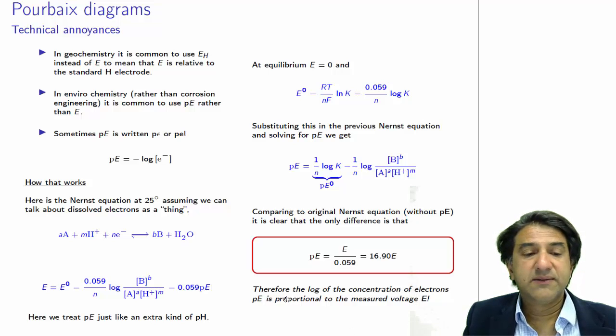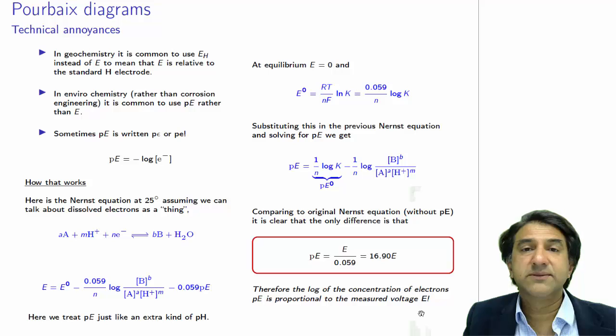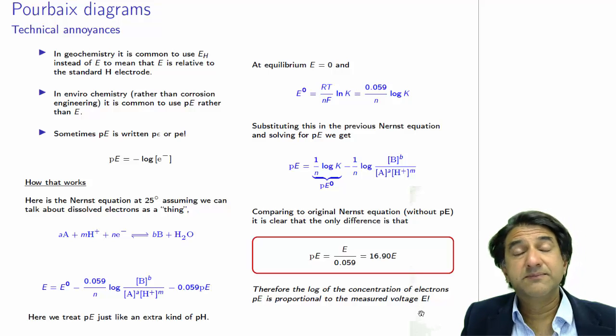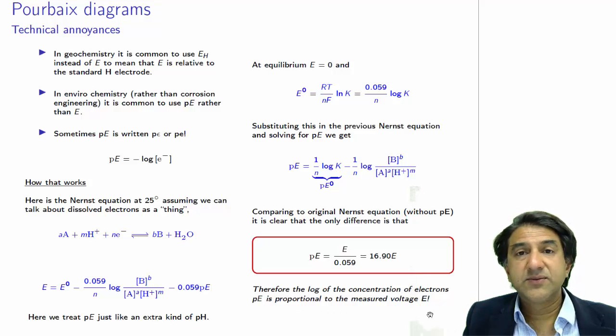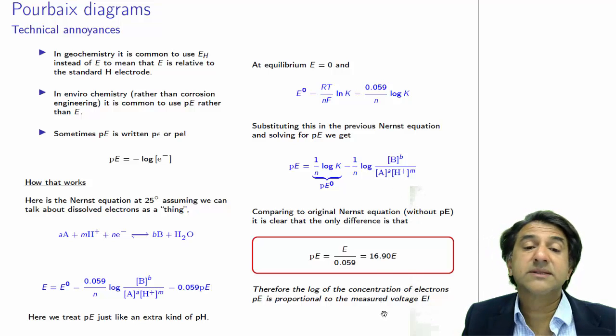So that's what PE is. The log concentration of electrons, that is PE, is proportional to the measured voltage, which is cool. So on one axis, we have pH. On the other axis, we can choose, if we want, to have the analogous quantity, PE or E. Take your pick. See you later.